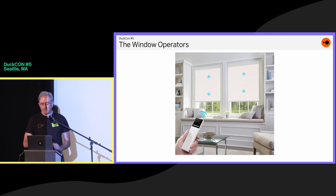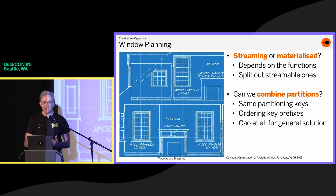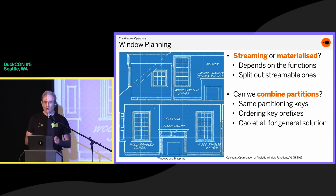How this is implemented is with what are called window operators, and we have two of them. The first thing we have to do is plan. The first choice is: can we stream, or can we just materialize it? This depends on the functions — we split out the streamable ones and do those first. We also combine the partitions, so you can have two functions that use the same partitions, maybe with keys in different order, or with fewer sort keys, including no sort keys.